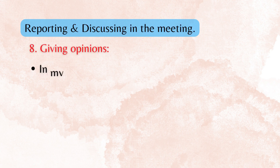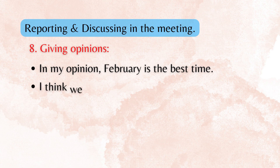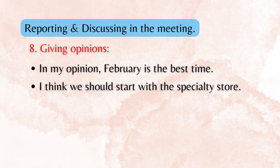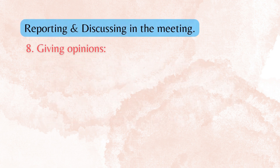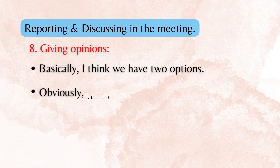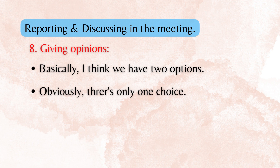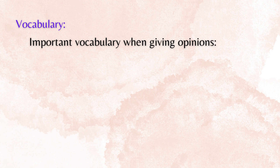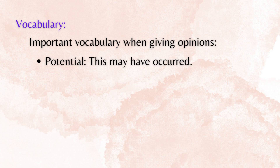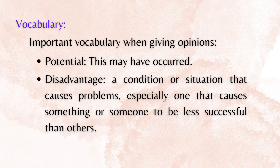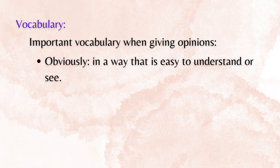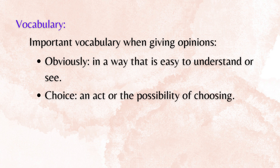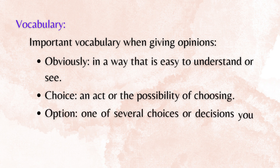8. Giving opinions. In my opinion, February is the best time. I think we should start with the specialty store. I think we should spend more time thinking about the potential disadvantages. Basically, I think we have two options. Obviously, there's only one choice. Important vocabulary: Potential — this may have occurred. Disadvantage — a condition or situation that causes problems, especially one that causes something or someone to be less successful than others. Obviously — in a way that is easy to understand or see. Choice — an act or the possibility of choosing. Option — one of several choices or decisions you can make.